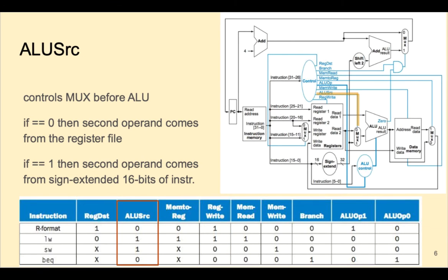ALU source controls the multiplexer to the left of the ALU. For all instructions, RS is the first operand into the ALU. The second ALU operand depends on the instruction type.